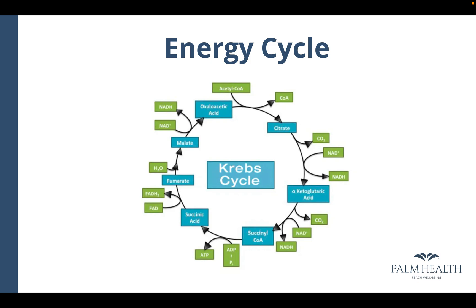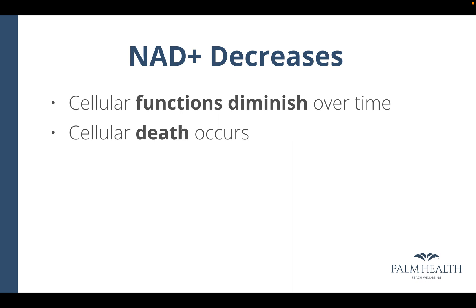If you consider one molecule of ATP is one dollar of energy, then one molecule of NADH is about 33 cents. So as the supply of NADH decreases over our lifetime, this cycle may not actually function as robustly as previous, and then cellular functions can diminish over time and eventually cells may die.